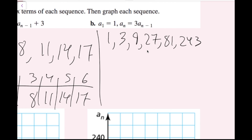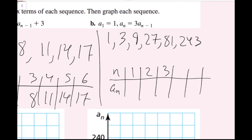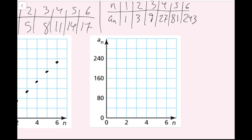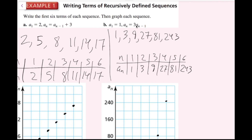To graph this, I make a table of values with n as the position number and a sub n as the value: positions 1 through 6 give values 1, 3, 9, 27, 81, and 243. Plotting these ordered pairs, notice that this is starting to look like an exponential curve — it does seem to be exponentially growing. That makes sense because it's a geometric sequence written recursively.